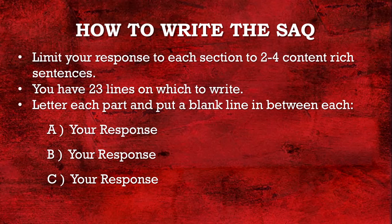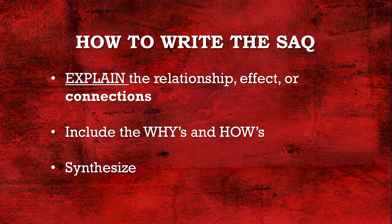Limit your response to each section to two to four content-rich sentences. You have 23 lines on which to write — that's about one side of a single piece of loose-leaf paper. Format your SAQs by lettering each part with a blank line in between each. So you'll have Part A with about three to four sentences, the same thing for B, and the same for C. This is not the same as writing an essay, but you are making a claim and backing it up with evidence.